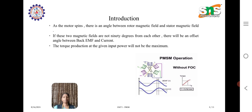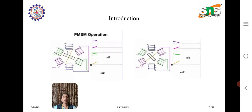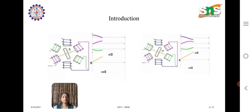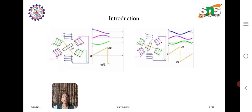Looking at this picture, the stator windings are represented in three colors — violet, pink, and green — where the rotor is between the windings. The magnetic field is perpendicular, and the waveform starts to generate. This is how a sine waveform is generated with the help of a permanent magnet synchronous machine.